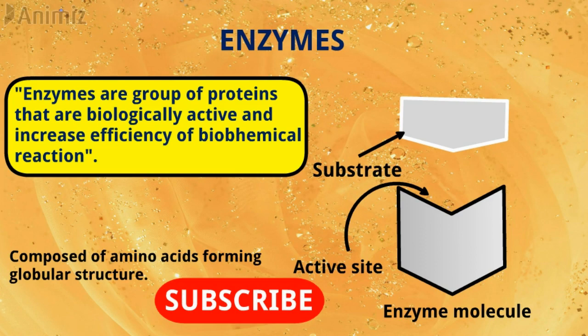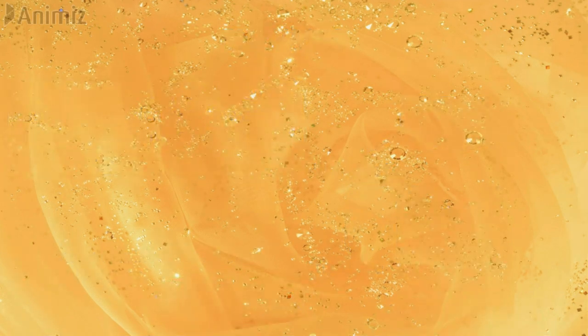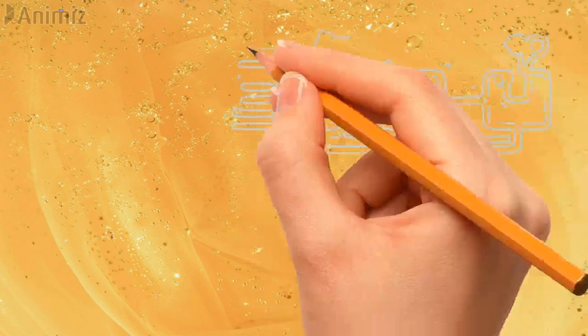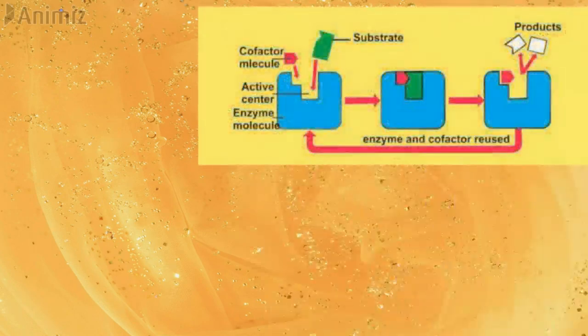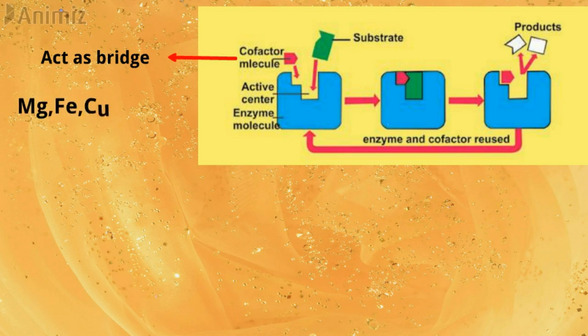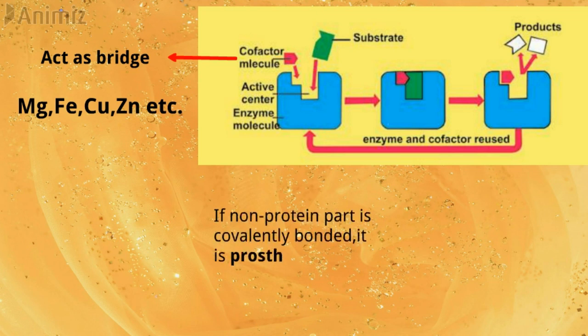Enzymes also have a non-protein part known as cofactors, which is essential for the proper functioning of the enzyme. The cofactors usually act as a bridge between the enzyme and its substrate. Some enzymes use metal ions as cofactors, like magnesium, iron, copper, and zinc.